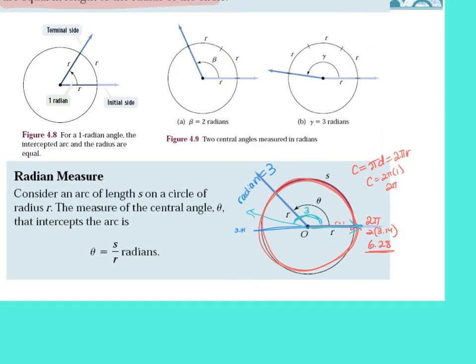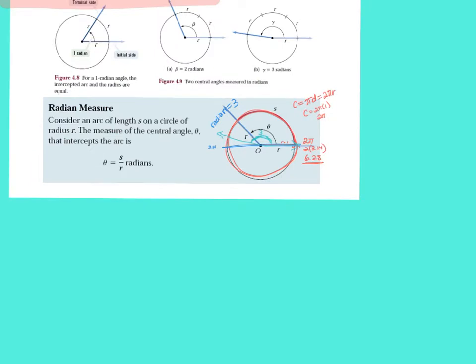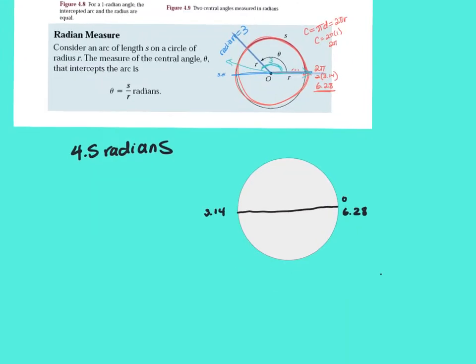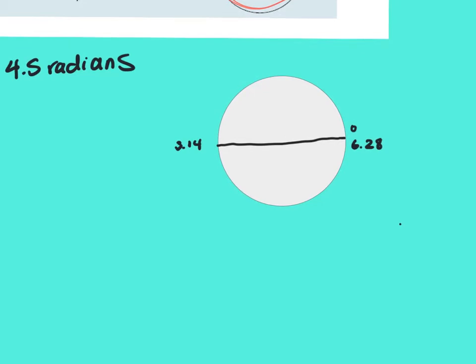If you want to graph, say, 4.5 radians, draw a circle and mark 0, 3.14 halfway across, and 6.28 all the way around. Going a little less than 3.14 gives you 3. Divide from 3 to 0 into three parts to get 1, 2, and 3. Extend those lines out and you get 4, 5, and 6.